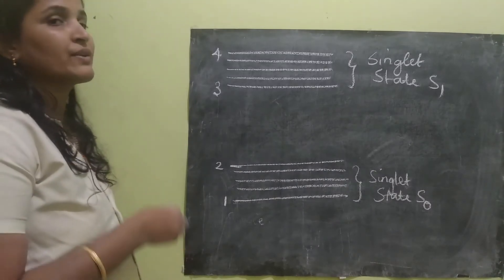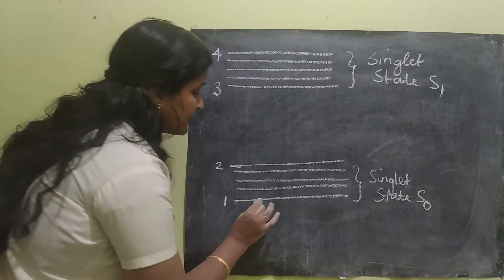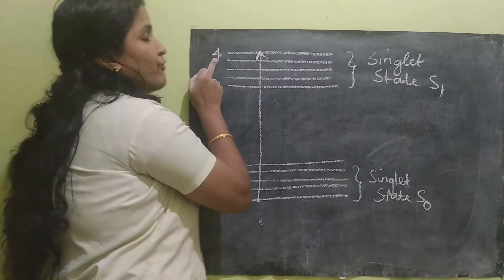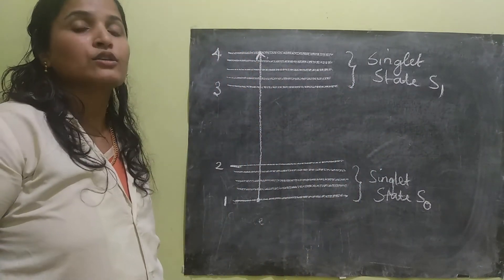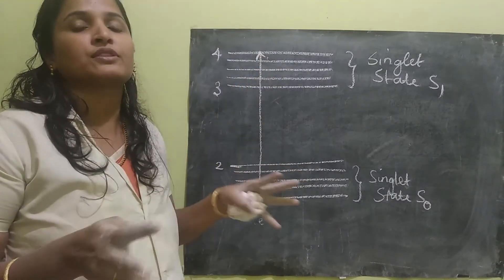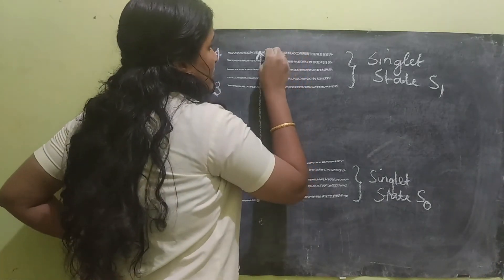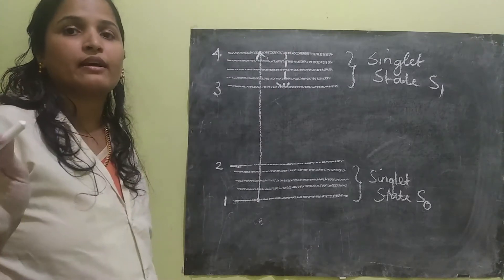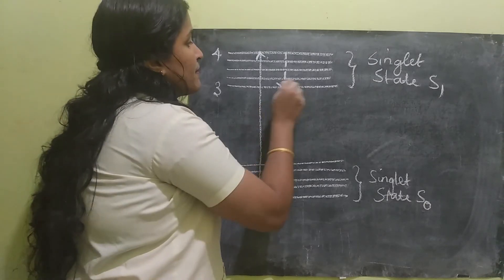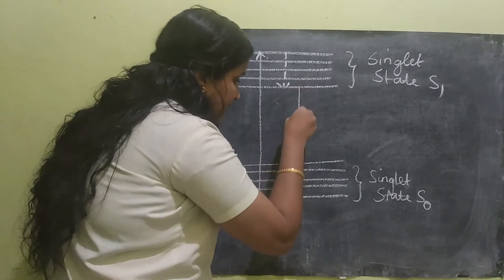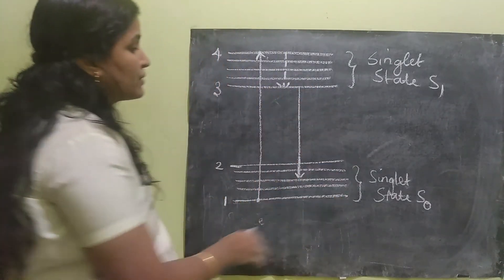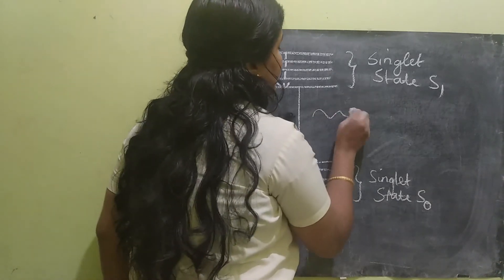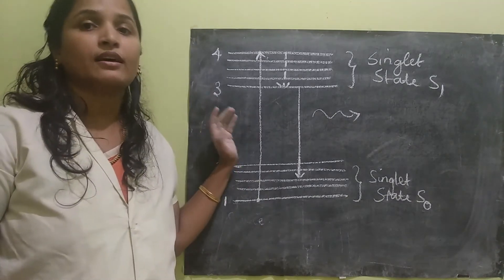The atoms in the dye material will be initially in the singlet state S naught. Once we give the pumping source of a smaller wavelength, the atoms in the ground state will be excited to the next upper state, which is 4 of the singlet state S1. Once it reaches the energy level 4, because of some thermal vibrations, it will be coming back to energy level 3. But it is a radiation-less decay, which won't emit any radiation at this moment. After some time, after gaining enough number of electrons, it will try to come back to the energy levels of the singlet state S naught. At this moment, some laser light radiation will be emitted. So this is the concept of the liquid laser.